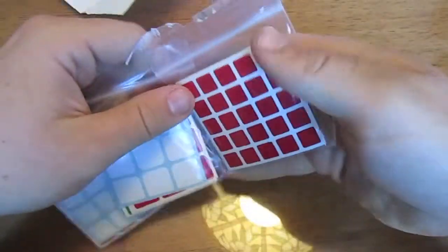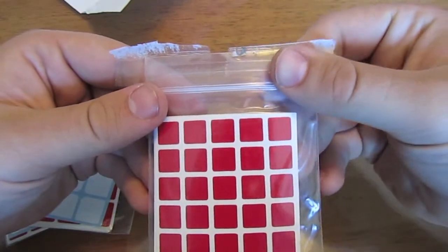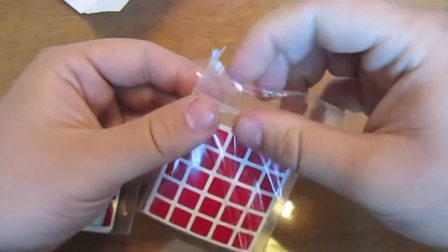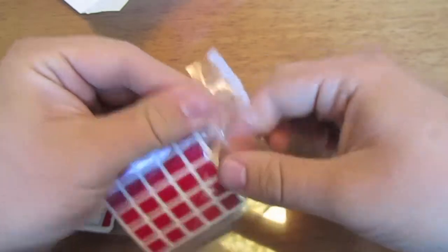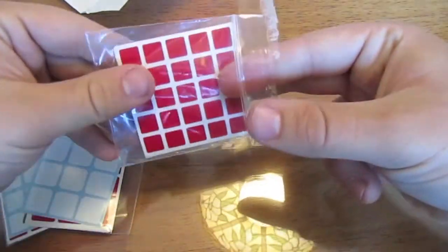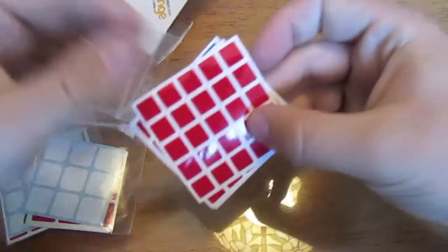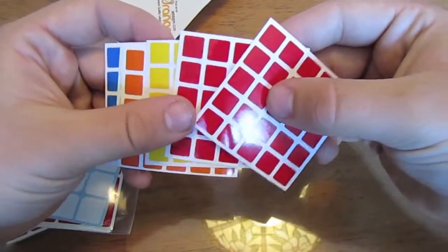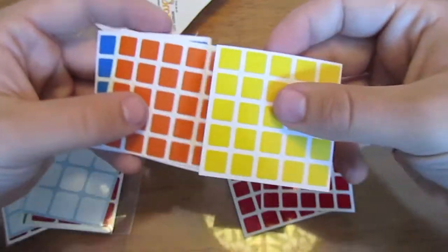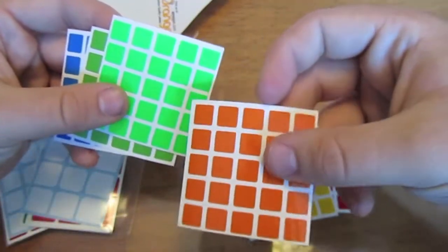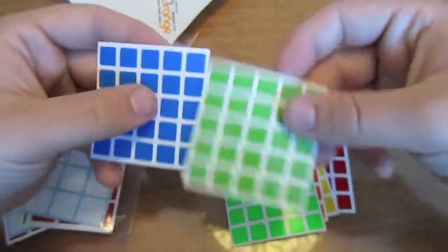Okay so here I have Shengxiao 5x5 stickers. These are the non-fitted ones. So it comes with two reds, yellow, orange, here's a couple greens and a blue.